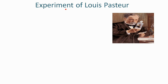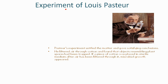This claim provoked Louis Pasteur to settle the matter once and for all. Pasteur filtered air through cotton and found that objects resembling plant spores had been trapped. If a piece of the cotton was placed in sterile medium after air had been filtered through it, microbial growth appeared. Next, Louis Pasteur designed an experiment to test whether sterile nutrient broth could spontaneously generate microbial life.